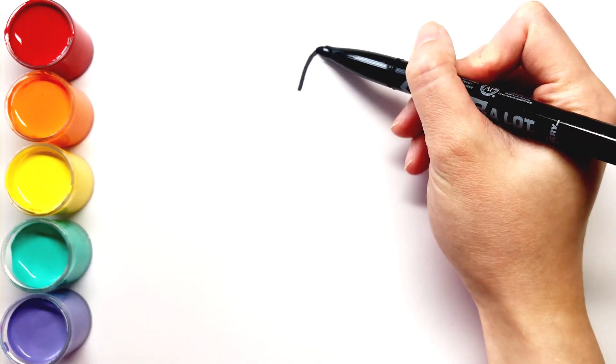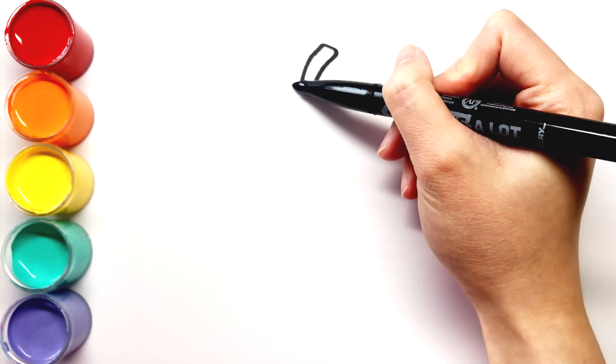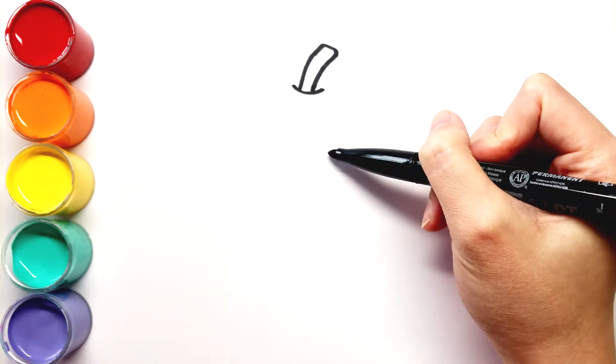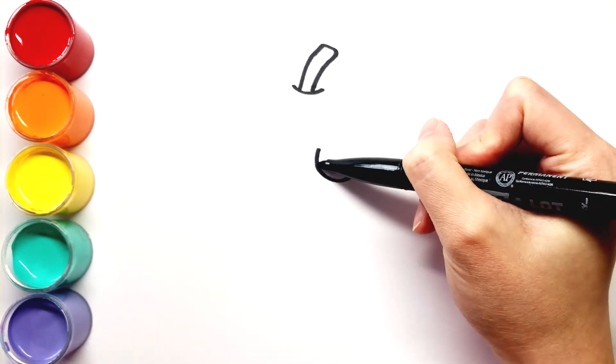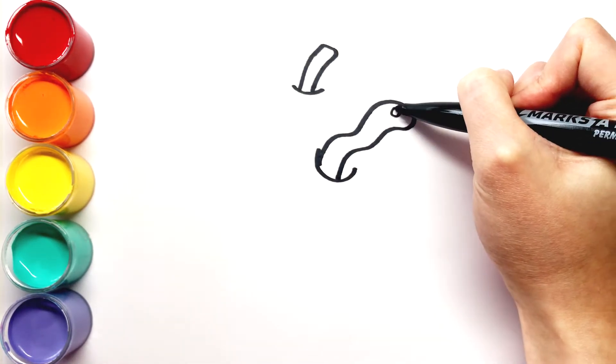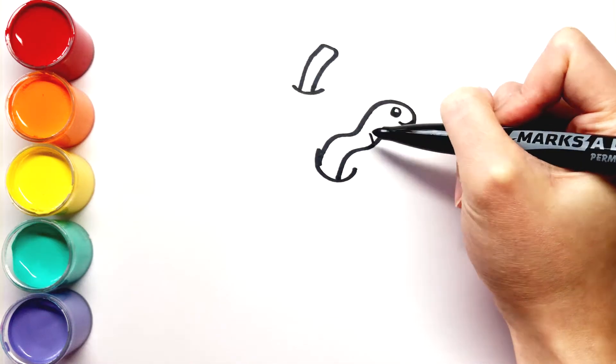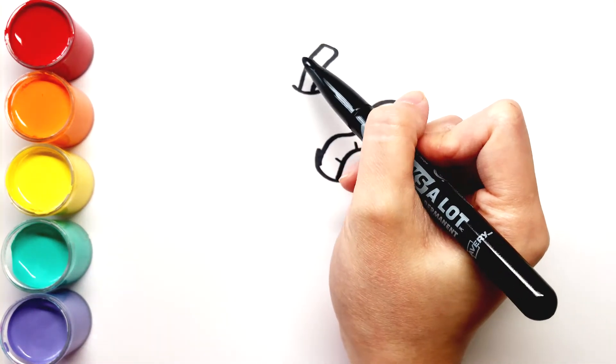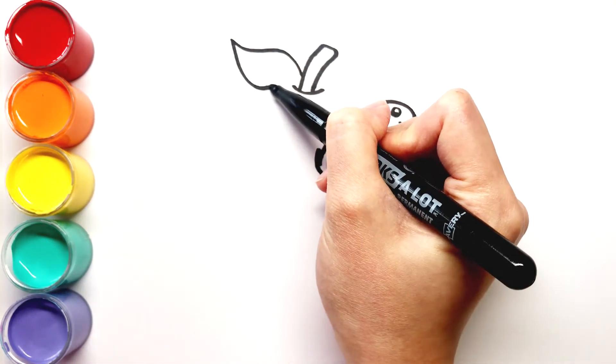First, draw a stem on top. Draw a little worm first so that it can sit in front of the apple. Add a little googly eye and a smile. Here's a little leaf.